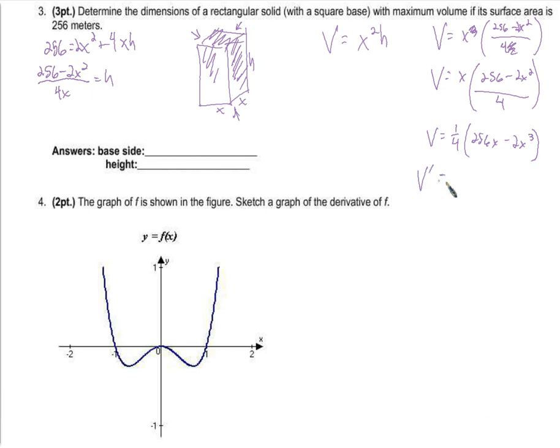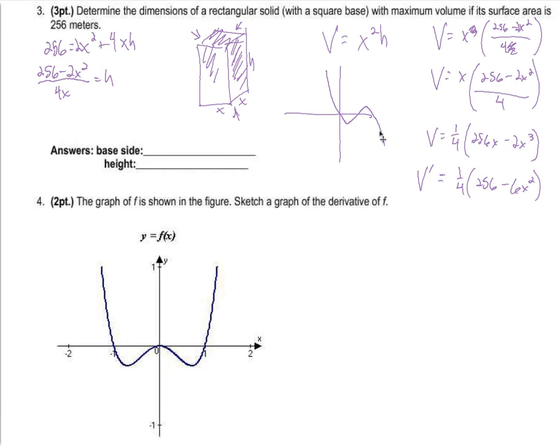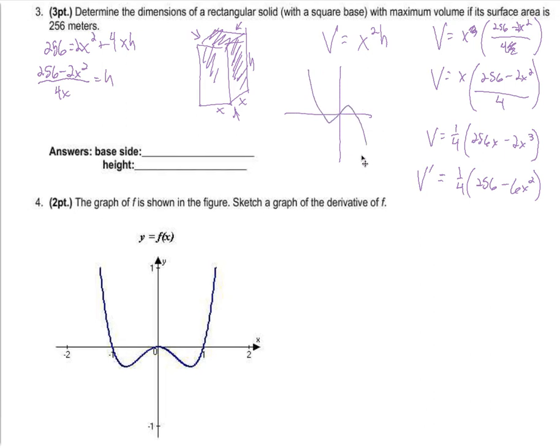So, v prime equals 1 fourth times 256 minus 6x squared. Alright? And then we want to set that equal to 0. Why? Because this is telling us, for any x, how much the volume is changing for that particular x. Right? If we look at the volume function, it looks like it's a cubic as well, but it does something more like this. Okay? Actually, probably more something like this. So, for some value of x, we find the biggest volume right there. What we're doing by taking the derivative and setting it equal to 0 is finding where that 0 slope is, that horizontal tangent line is.